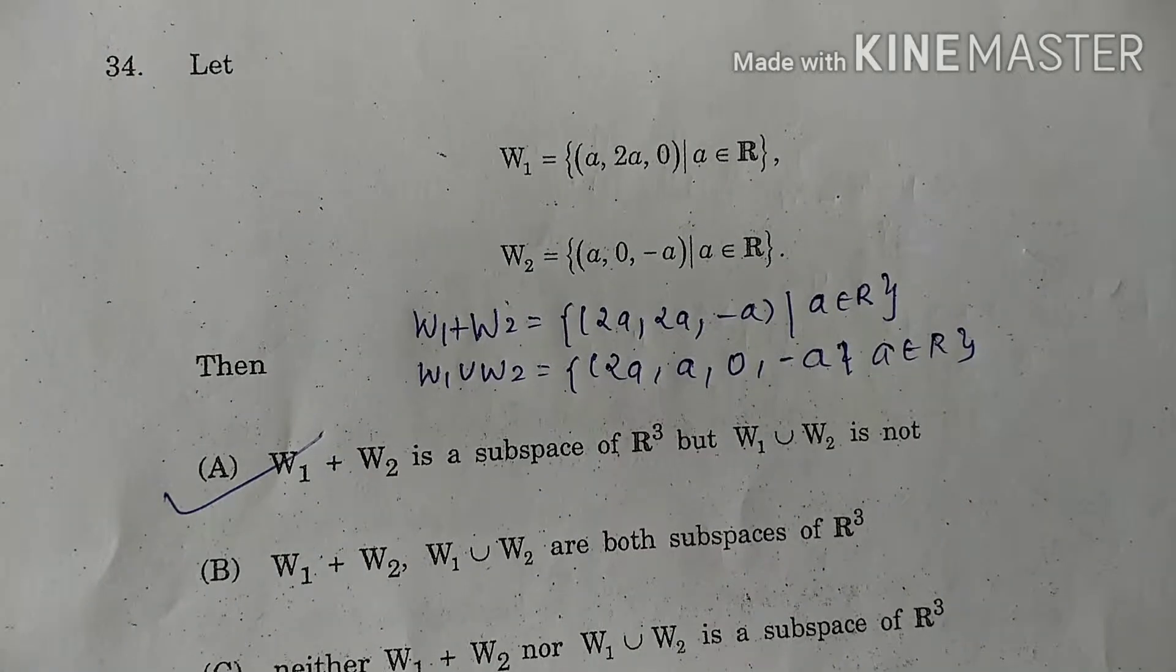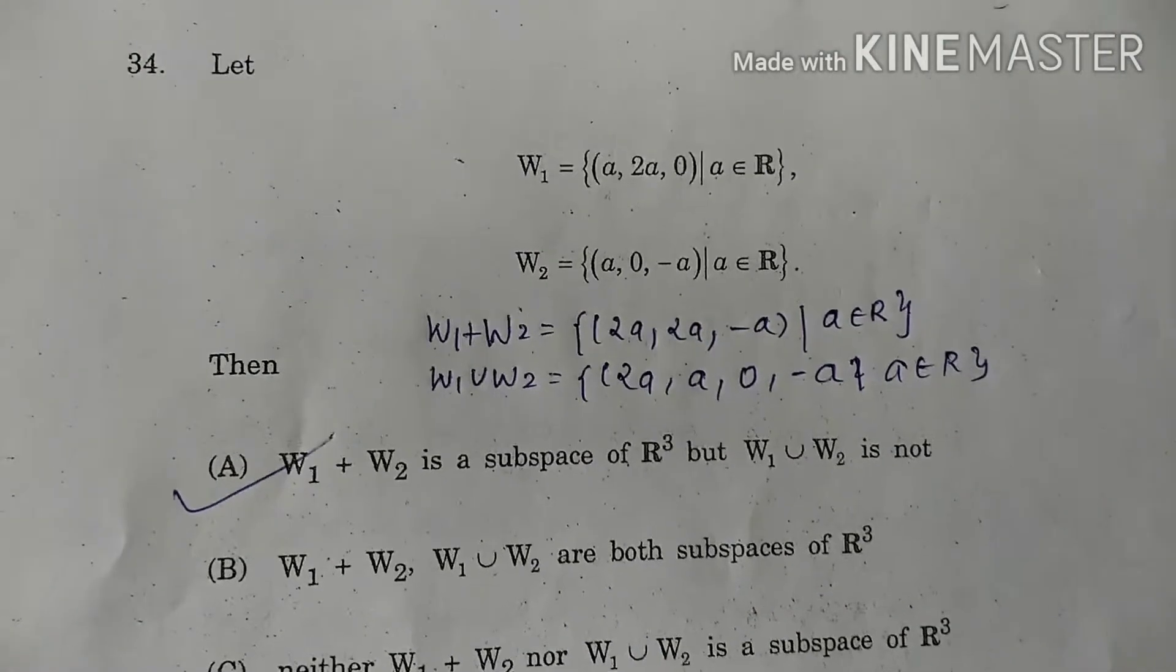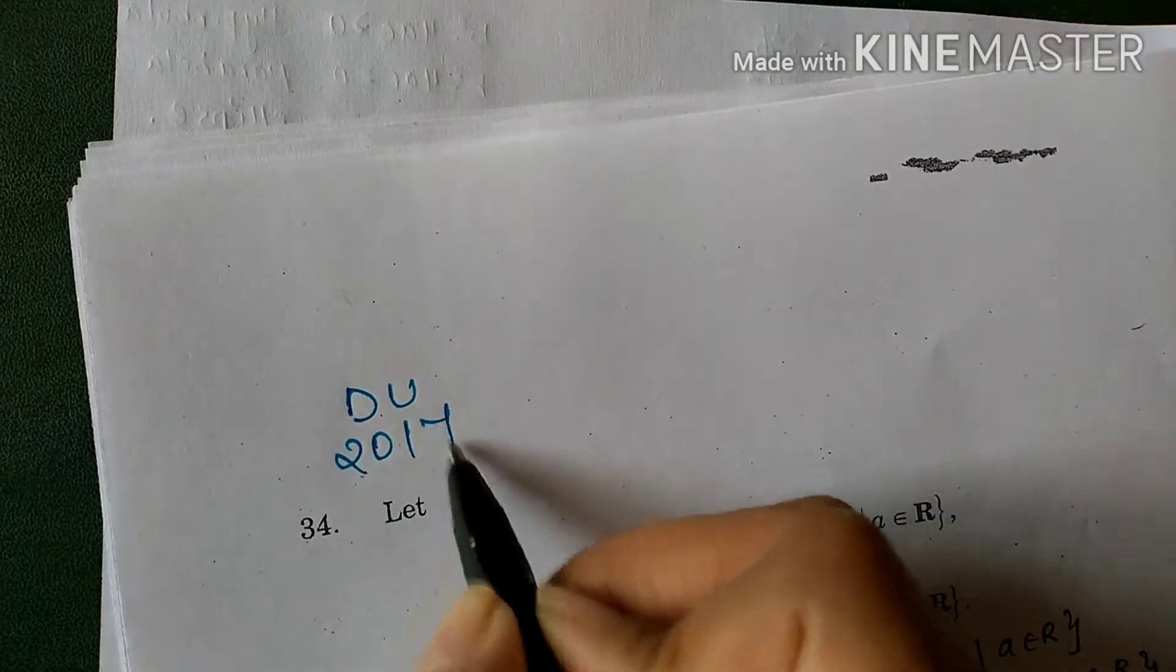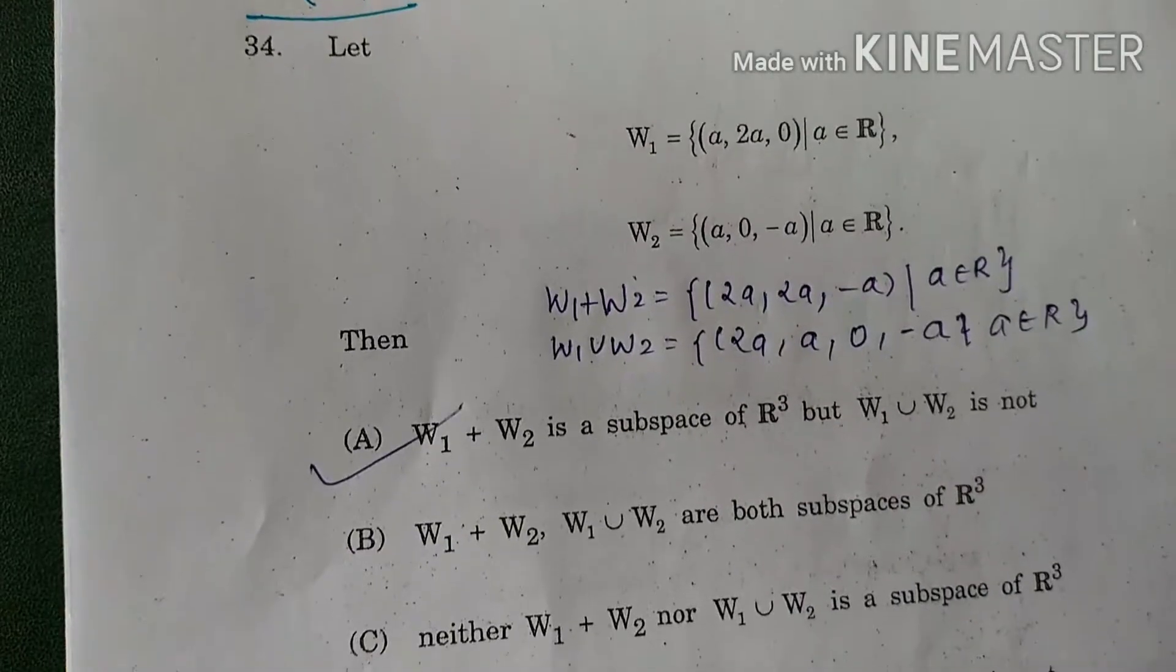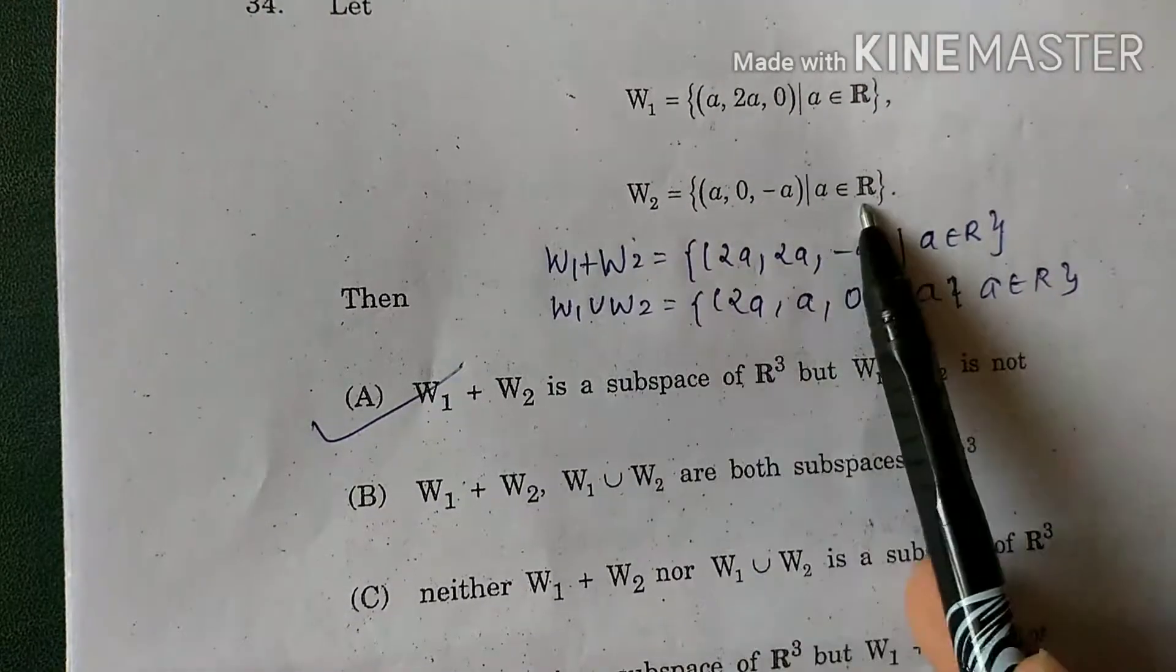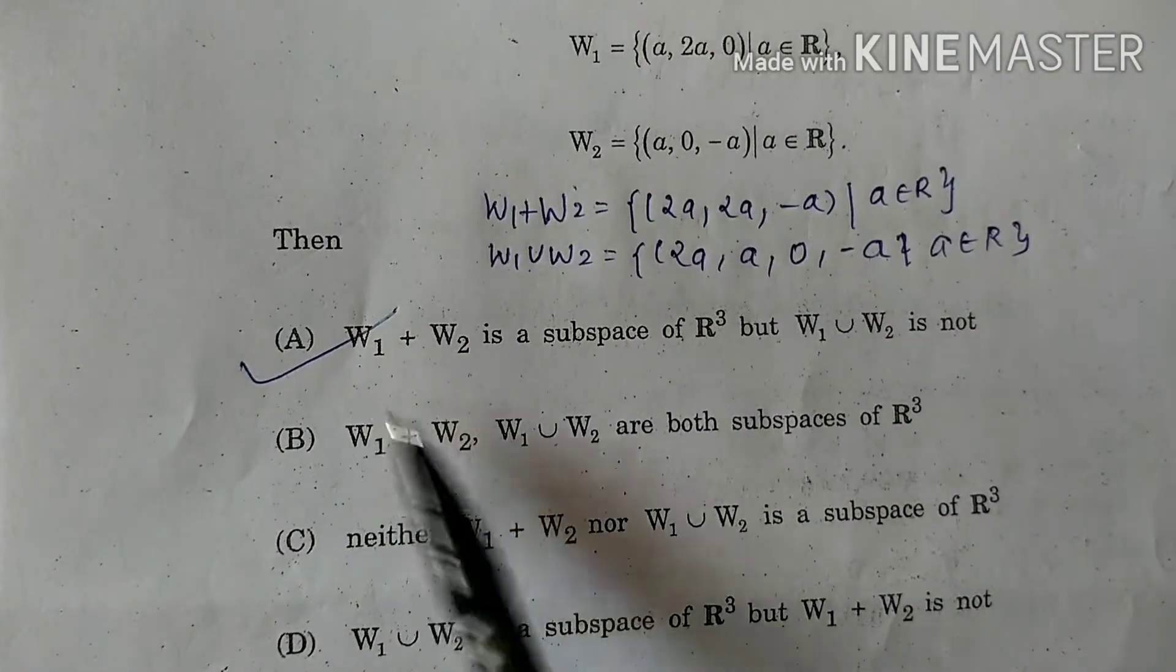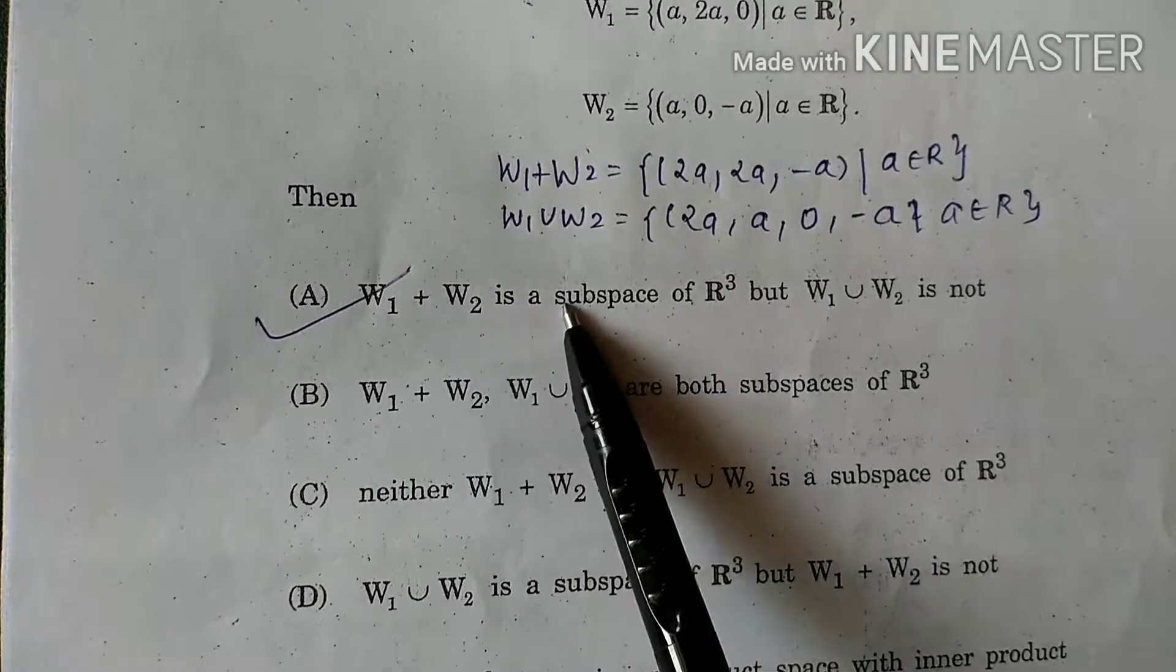Hello friends, let us see a question of subspaces. This is from DU 2017, we are going to see the 34th question. The question is: let W1 equals this value, W2 equals this. Now first of all, see the first option. The first option is W1 plus W2 is a subspace of R³, but W1 union W2 is not.